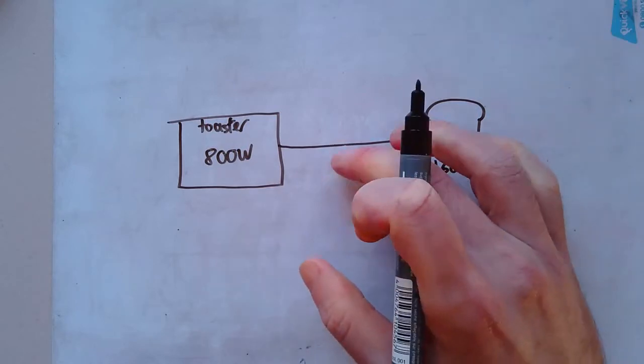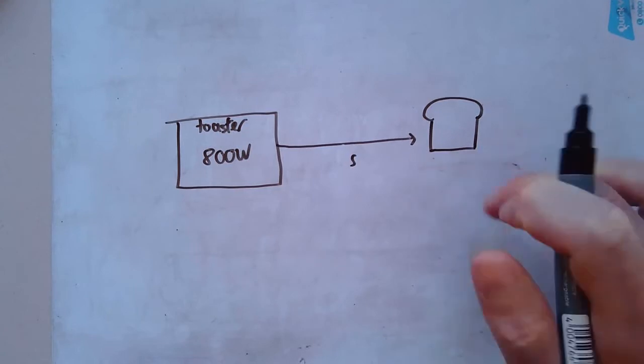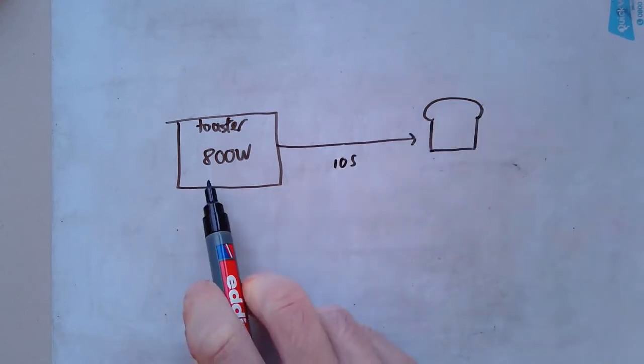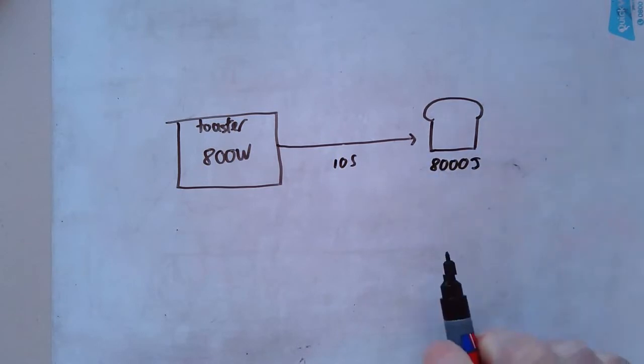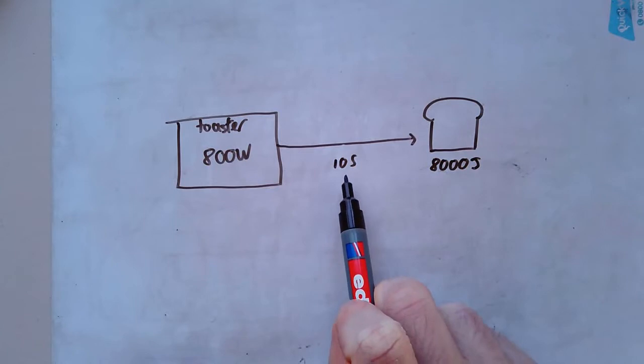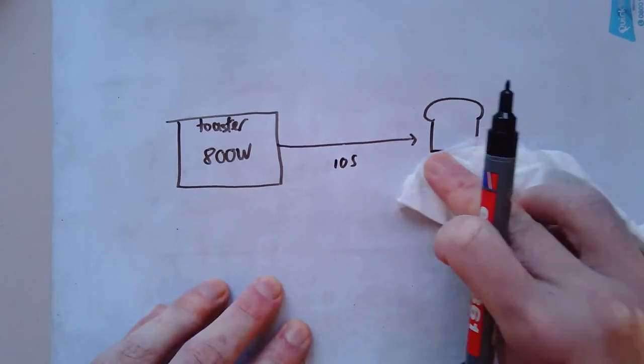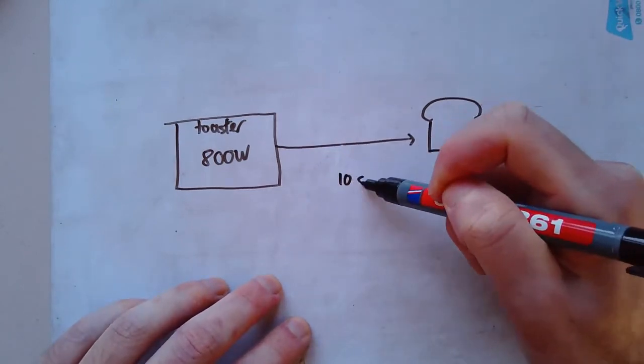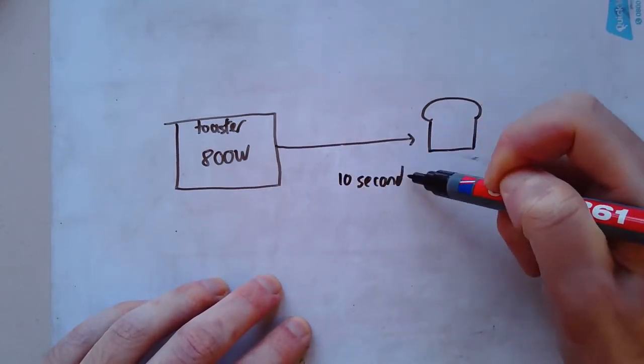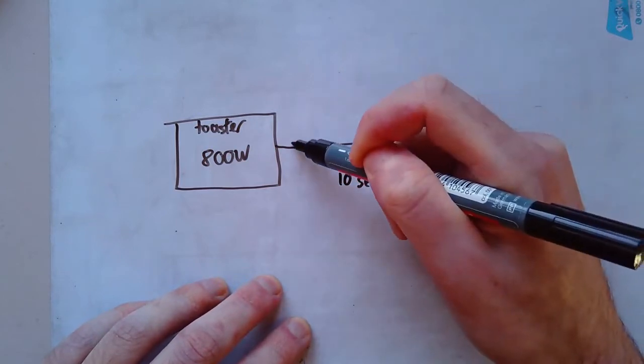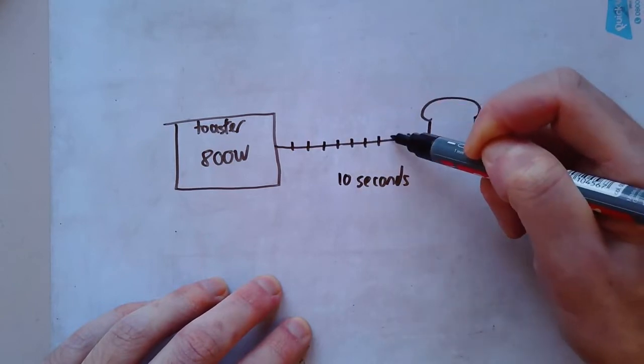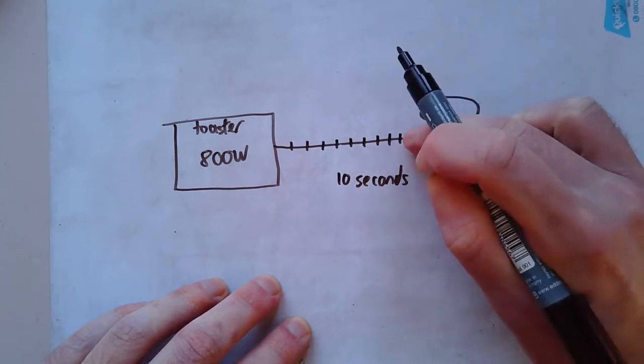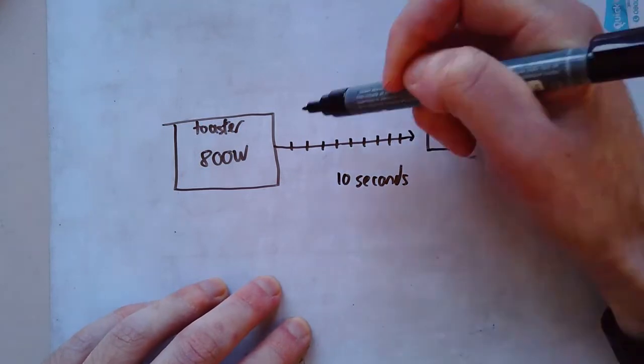Let's say I left it on for 10 seconds. So 10 seconds would be 800 times 10, which is 8000 joules. Because each of those seconds, it's transferring 800 watts. Another way to kind of visually represent that is if I had to say 10 seconds, I could break up my arrow into 10 bits. One, two, three, four, five, six, seven, eight, nine. And this last bit there is going to be 10. And in each of these, there's 800 joules.